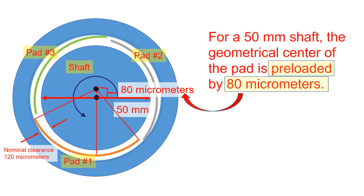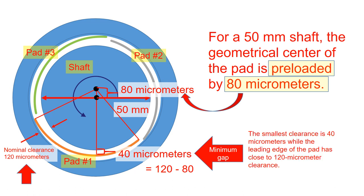When the pad is preloaded, the center of the pad is offset by a certain amount from the center of the shaft. This renders the minimum bearing gap of 40 micrometers, while the leading edge of the pad has close to 120 micrometer clearance. This preloaded condition makes the wedge effect effective.